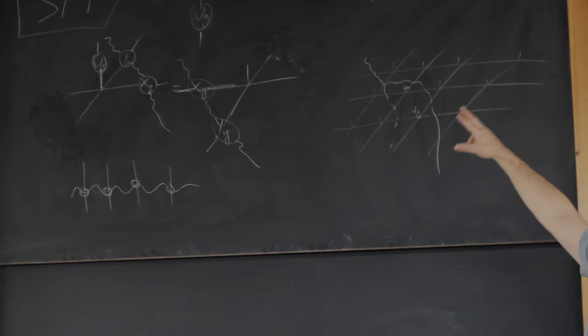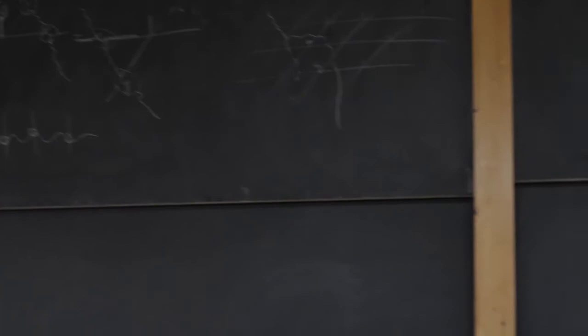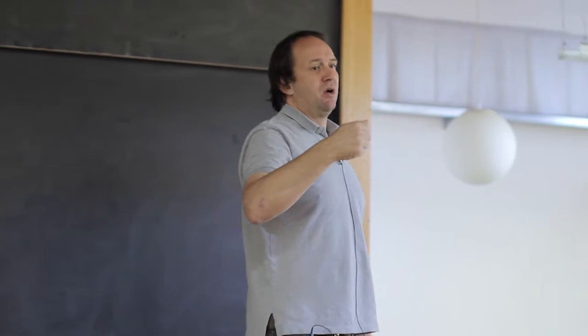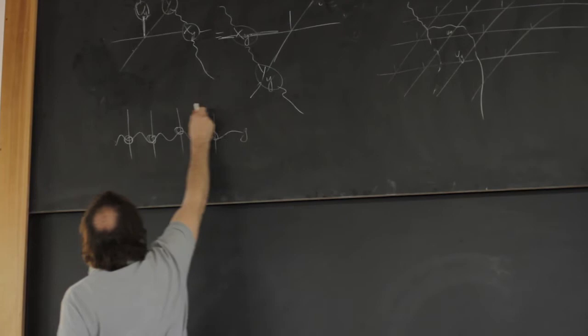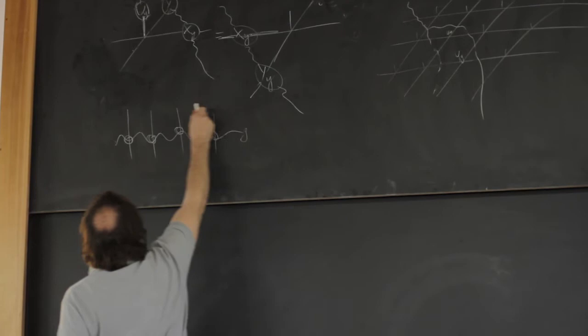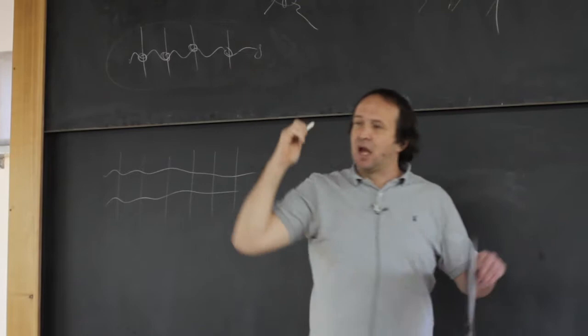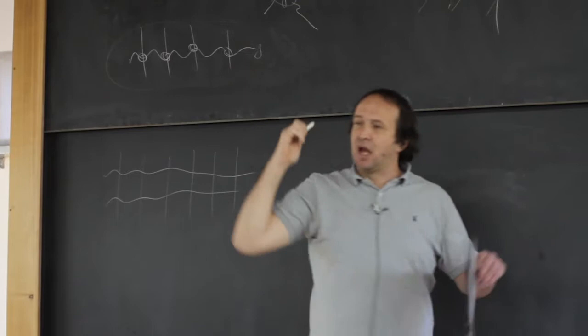Just as we figured out yesterday that the X(G)'s have to form a projective representation of your group — they didn't have to form ordinary representations, projective representations were enough — and we classified all projective representations using the second cohomology group H²(G,U(1)). The question now is: what is the generalization of this to the 2D case? There is now a matrix product operator associated to each group element.